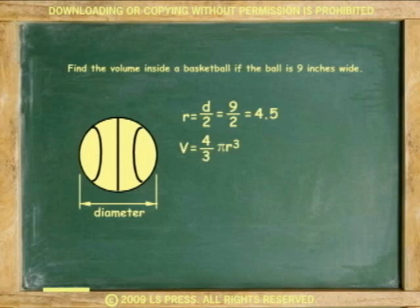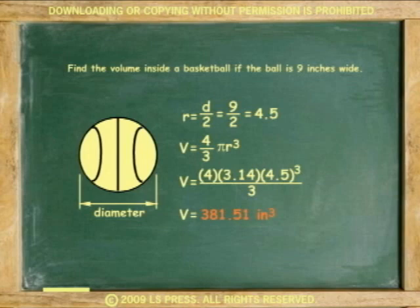The volume of the sphere is 4 over 3 times pi times the radius cubed. 4.5 cubed times 4 times 3.14 divided by 3 equals 381.51 cubic inches.